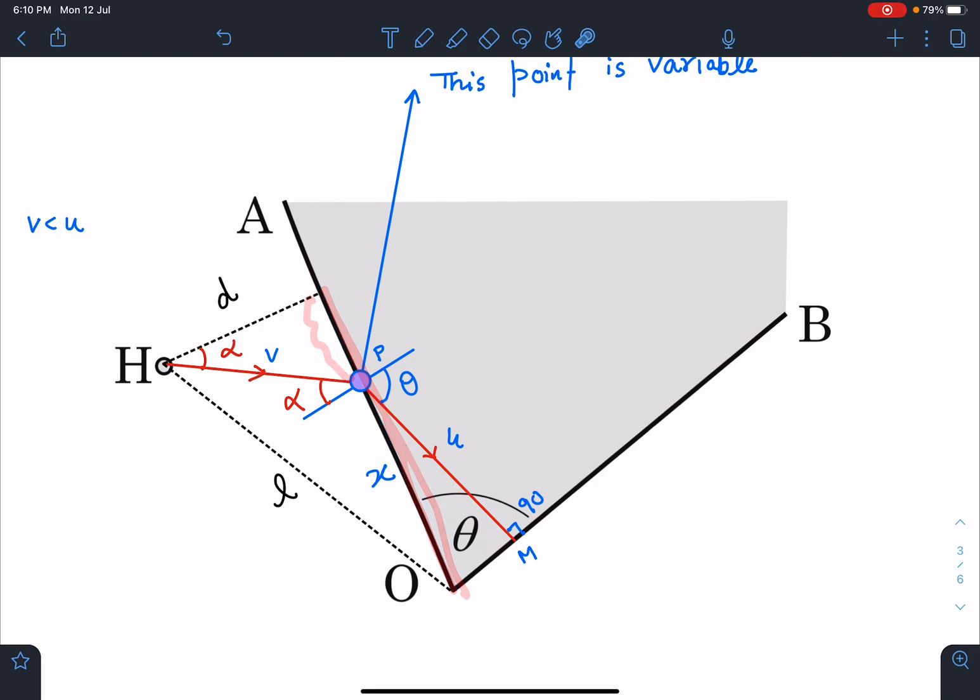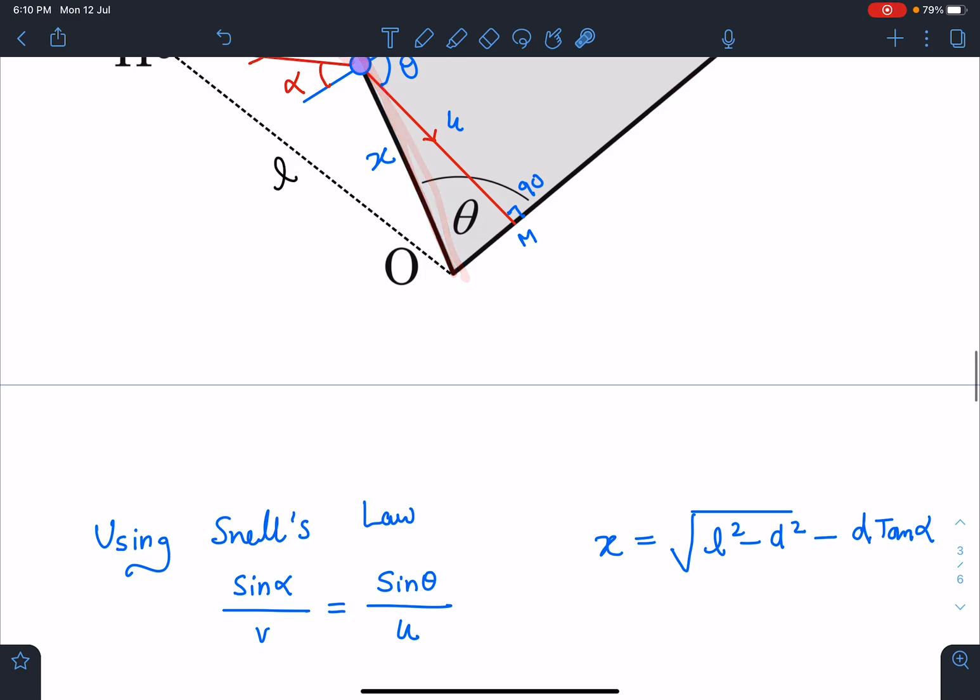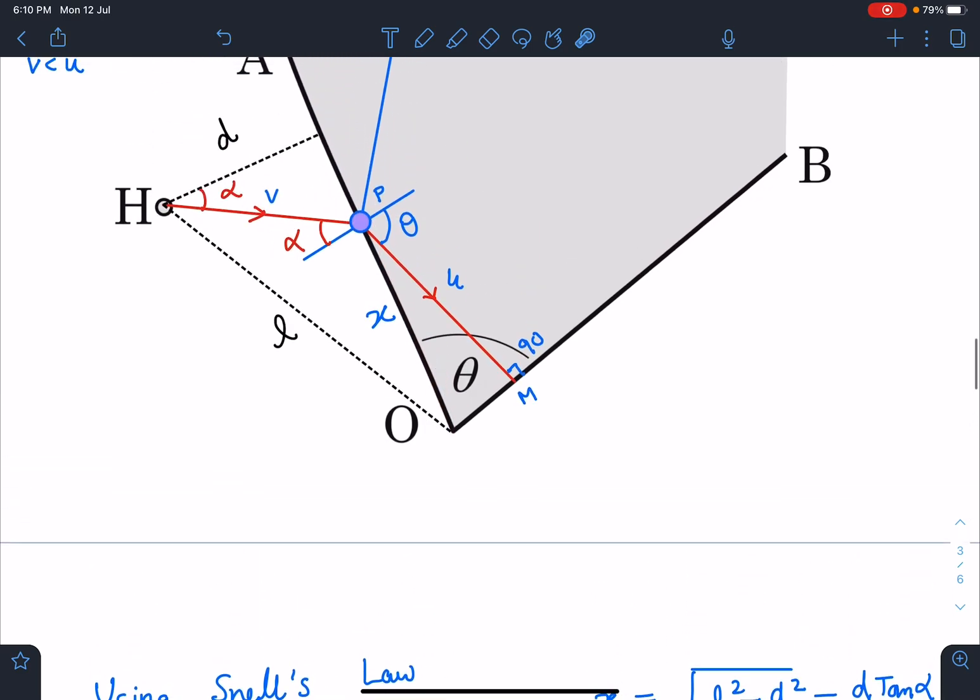Now we have to minimize this time. So this t expression, if I write it: t is nothing but HP / v plus this distance PM / u. So that is what I have written: HP / v + PM / u. This is the time expression.